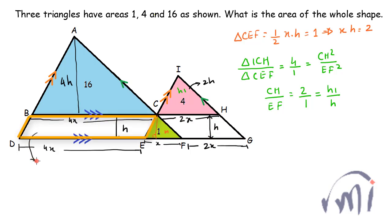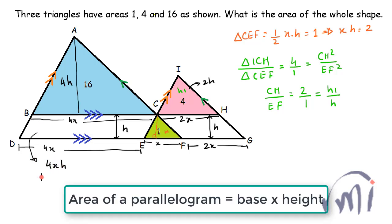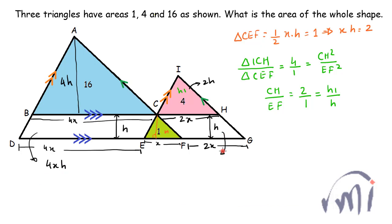The area of this parallelogram is 4xh, and the area of this parallelogram will be equal to 2 times xh. Since xh is equal to 2, this will be equal to 8 units and this will be equal to 4 units. So the total area will be equal to 16 plus 4 plus 1 plus 8 plus 4, so this is 33.